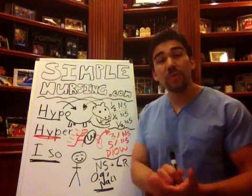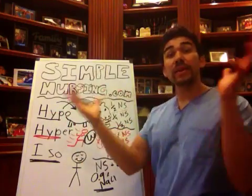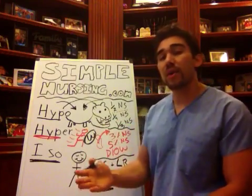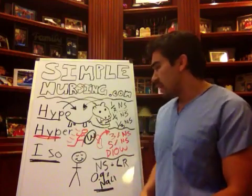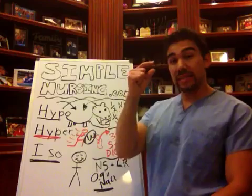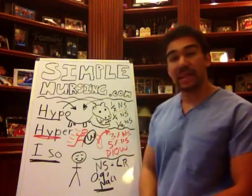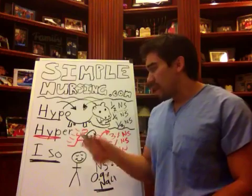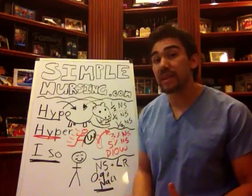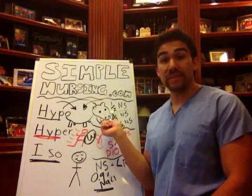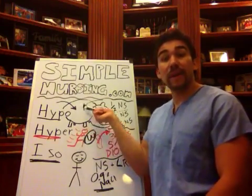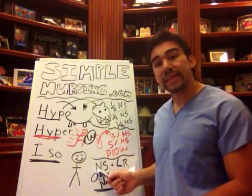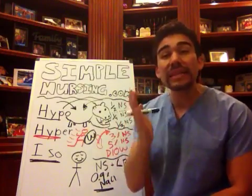Let's review one more time. You have hypotonic solutions — the big numbers: 0.45% NS, quarter NS, and one-third NS. Then you have hypertonic solutions — the itsy-bitsy numbers: 3% NS, 5% NS, and all your W's — D5W and all your waters. Another way to remember this: would you want a 5% raise or a 45% raise? Itsy-bitsy compared to jumbo — the big ones. And the last one is isoperfect — your normal saline and your lactated Ringer's. Please commit this to memory.